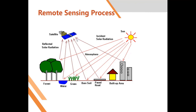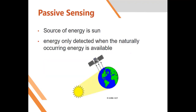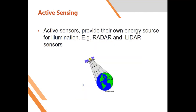With passive remote sensing, the only source of energy is the sun — without the sun, no remote sensing takes place. We also have active remote sensing, where the sensor emits its own energy; it doesn't need the sun. It emits energy and records it back. An example is radar or LiDAR — with radar satellites, they emit their own energy and then record it back.